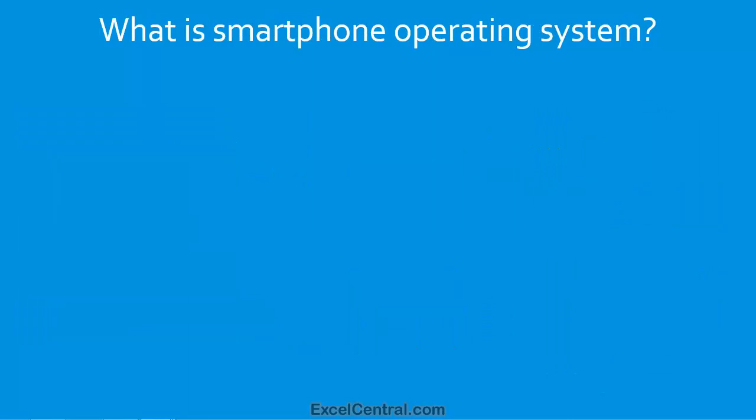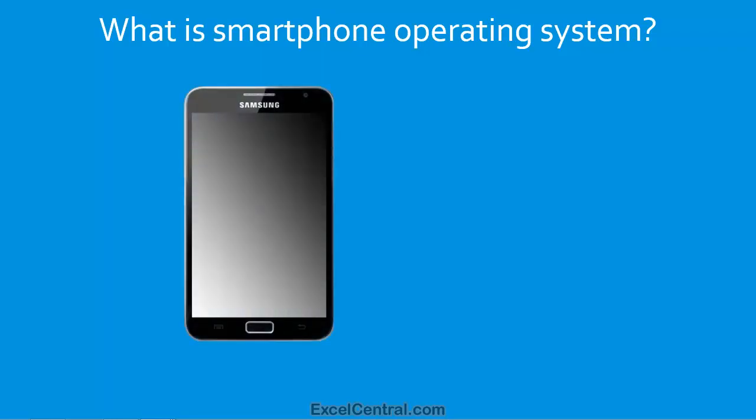Now let's move on to smartphones. What exactly is a smartphone? A smartphone is a mobile telephone that also includes a computer and a touchscreen. Lightweight mobile operating systems have been specially designed for smartphones. Also, small programs, commonly referred to as apps, have been developed to run on these mobile operating systems.